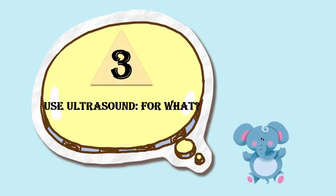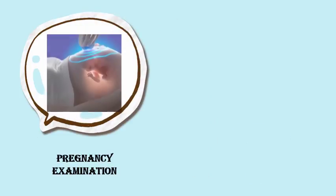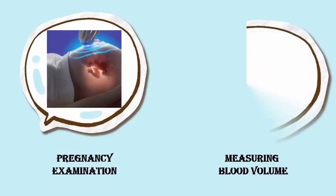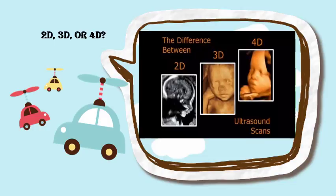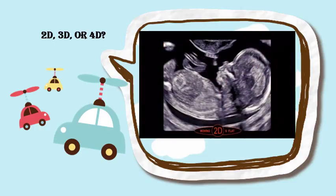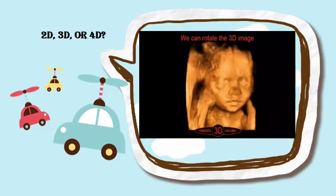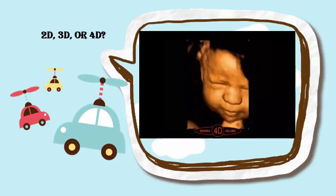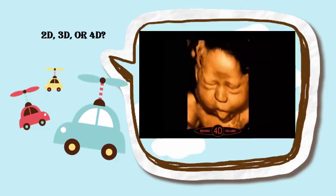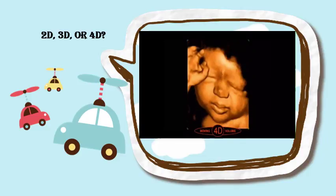4D scanning can provide more information about abnormalities and make a significant contribution to understanding organ anomalies. 4D ultrasound scanning can be applied in the cardiovascular system and pregnancy. Devices used in 4D ultrasound are almost the same as in 2D ultrasound: a probe with a piezoelectric transducer to produce ultrasound and receive echoes, and an ultrasonic scanner to form and display images.